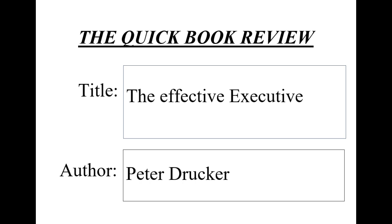In his book The Effective Executive, Peter Drucker explores the concept of effectiveness in the business world and how it can be achieved. One of the main topics Drucker discusses is the importance of focusing on results rather than just working hard. He argues that the most effective executives are able to prioritize their tasks and allocate their time and resources to achieve the greatest results. Drucker also advises that executives should focus on their unique abilities and delegate tasks that fall outside of their area of expertise to others.